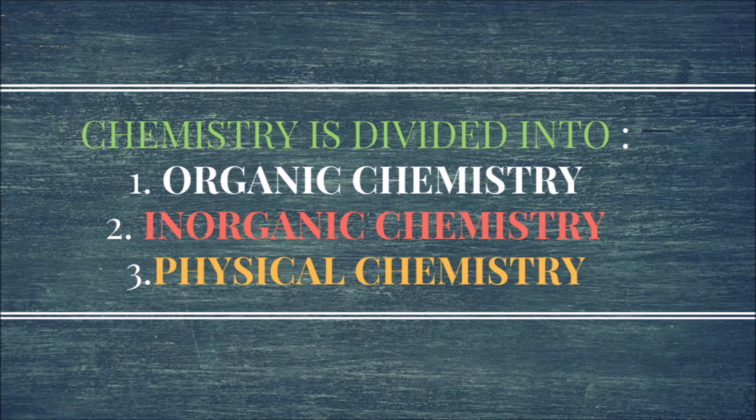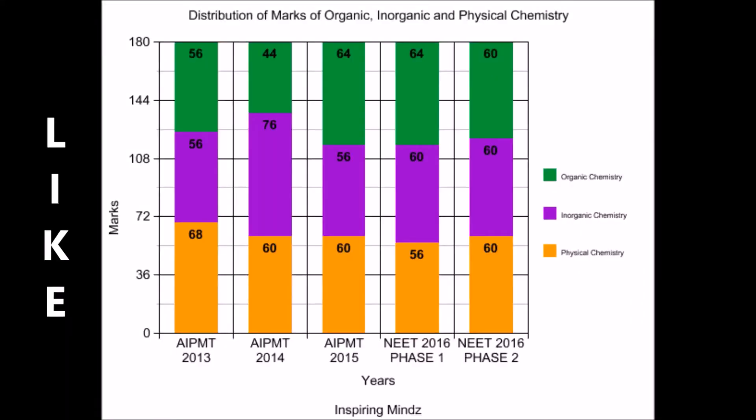We all know that every year 45 questions are asked in chemistry and each question consists of four marks, so the total weightage for chemistry is 180 marks. Now let's discuss the distribution of organic, inorganic, and physical chemistry.